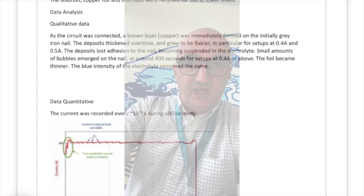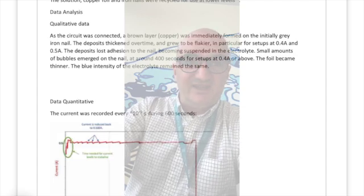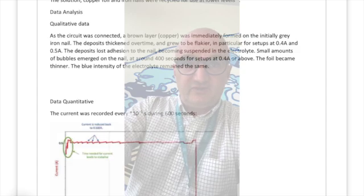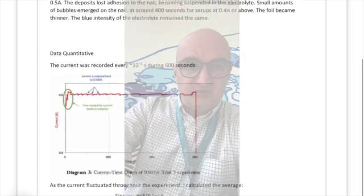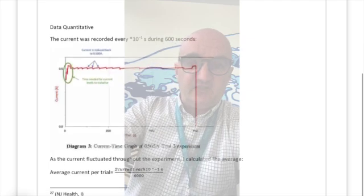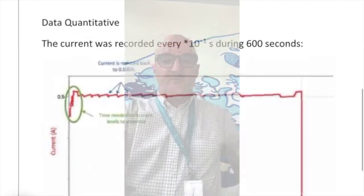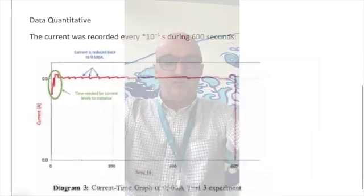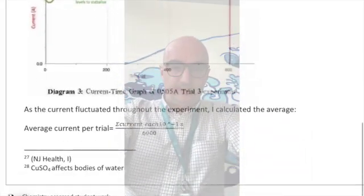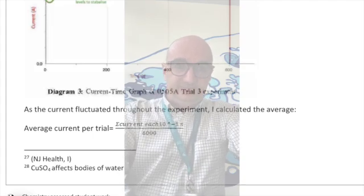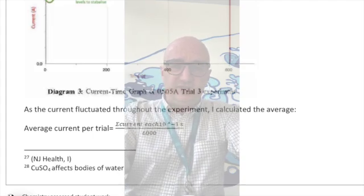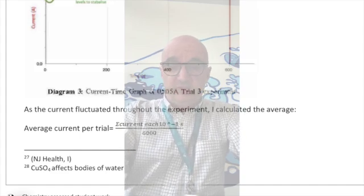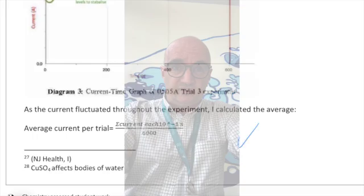Qualitative is nice. It grew to be flakier. I quite like that. Bubbles on the nail. That's good. It's around 400 seconds or above. The blue intensity remained the same. That's nice. And we have some experimental data to back it up. Whenever you are asserting something, always put in the data to back up what you are asserting. The student has given an exemplar calculation here for the average current. Okay. They didn't give the calculation for how they worked out the concentration of the copper sulfate.